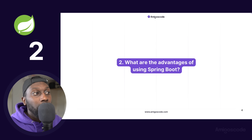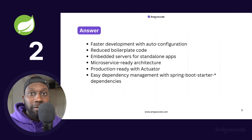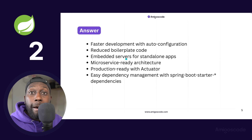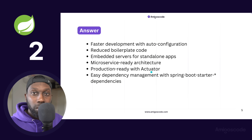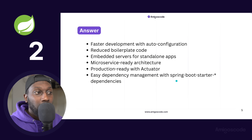This leads nicely into the advantages of using Spring Boot: faster development with auto-configuration. You've only added one annotation and you have a web server up and running. You also get Jackson for JSON serialization and deserialization out of the box, reduced boilerplate, embedded servers, microservices-ready architecture, production-ready features with Actuator, and easy dependency management with Spring Boot starter dependencies.